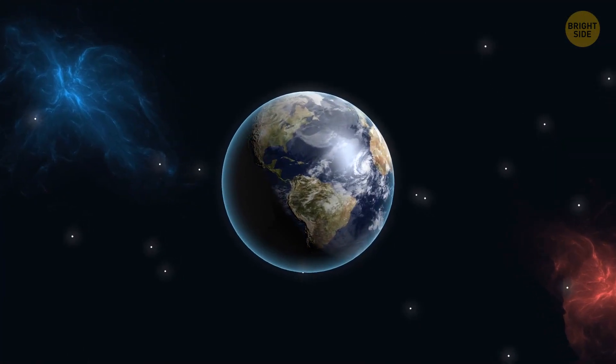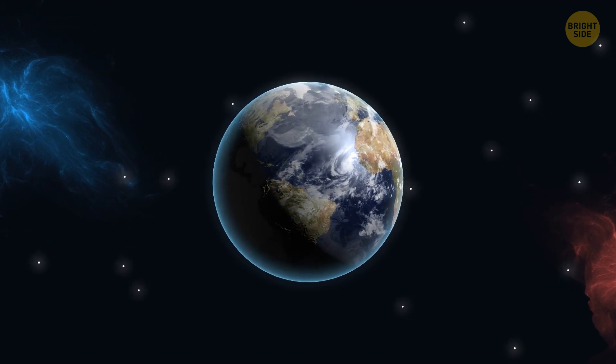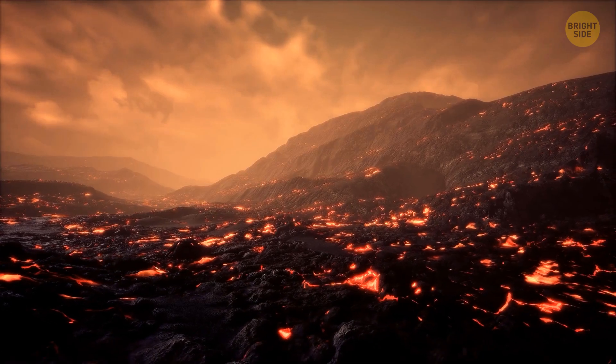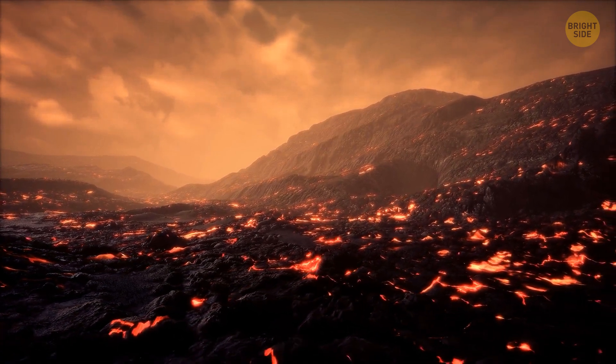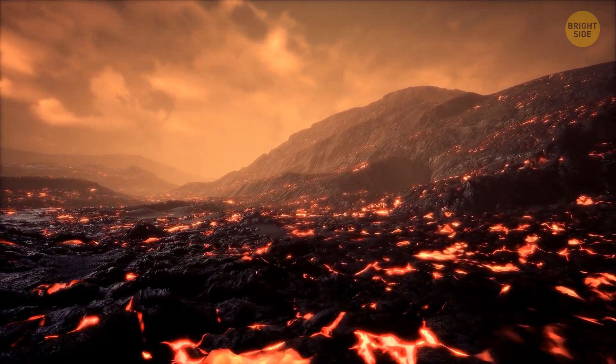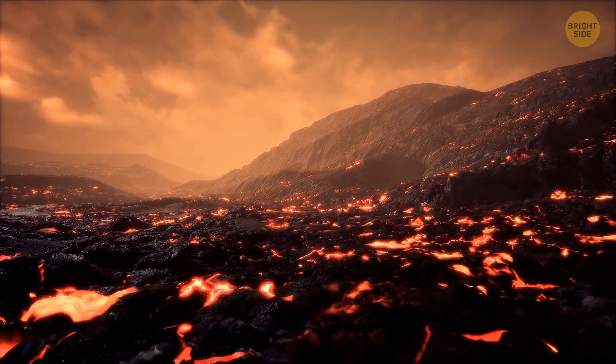We have similar structures here on Earth, which could help us better study those on the moon remotely. They form once the top part of a stream of lava solidifies, and the molten rock inside drains away, creating this rock tube.